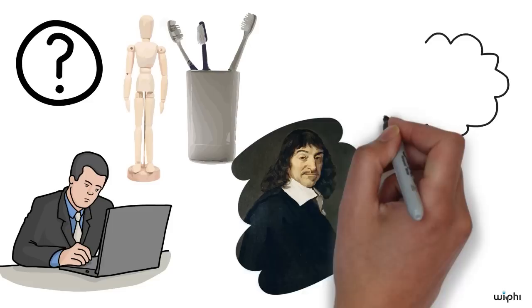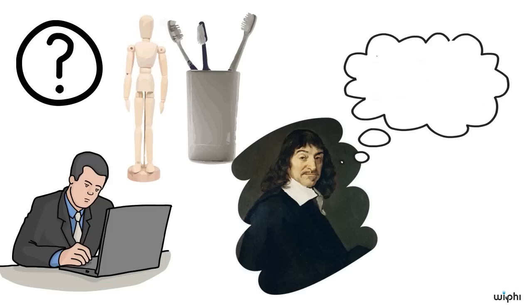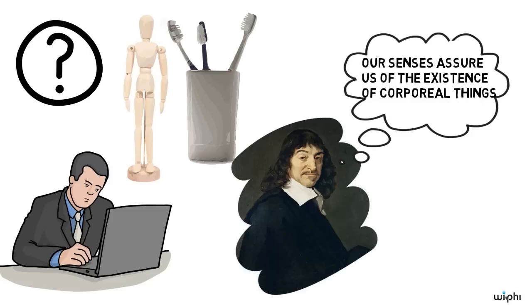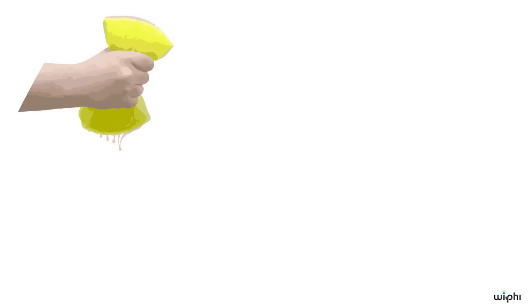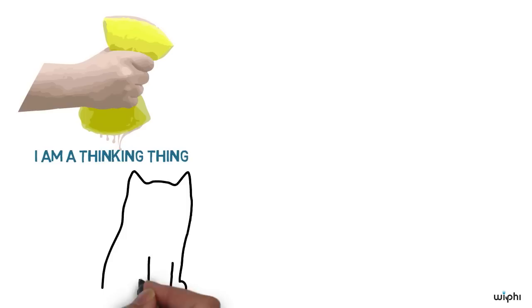the only comfort I can give you is that Descartes at least thought that it can be proved that we can be certain that we have a body and that our senses by and large assure us of the existence of other corporeal things, even though they systematically deceive us about their nature. And this can be proved by further squeezing out our clear and distinct idea of ourselves as a thinking thing.